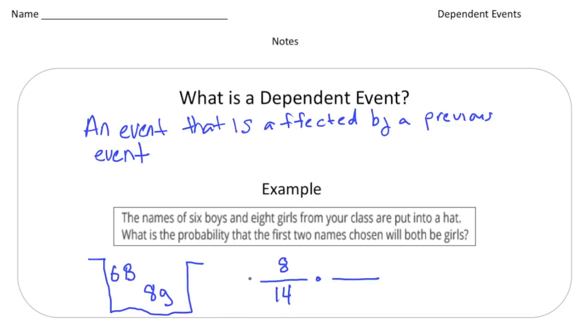Alright. Now here's the part that makes it dependent, right? So I take one of those names out. And now there's seven remaining. And here's the first girl's name we took out, right? So notice how that now changes the probability of the second event, right? It's dependent on the first one. So now there's only seven girls left out of 13 because six plus seven is 13. So do you see how the second event is impacted by the first event? That's what makes it a dependent event.